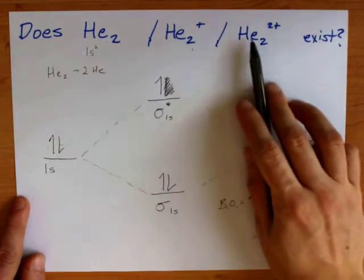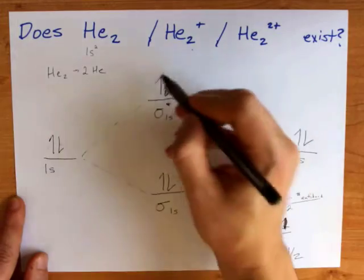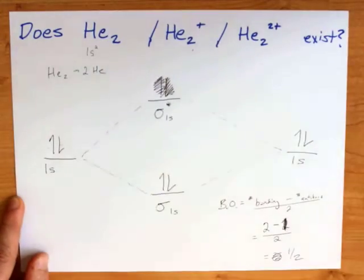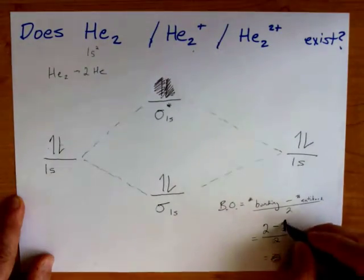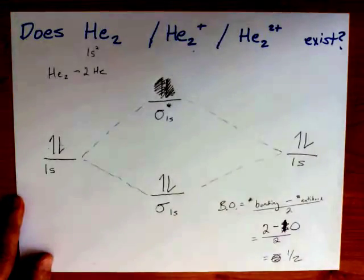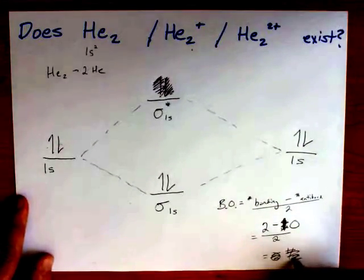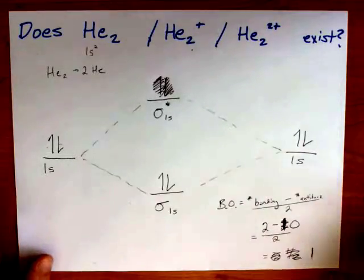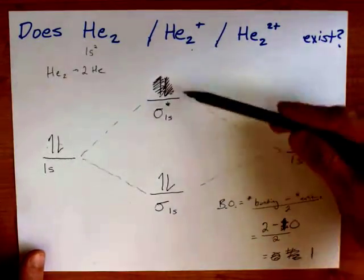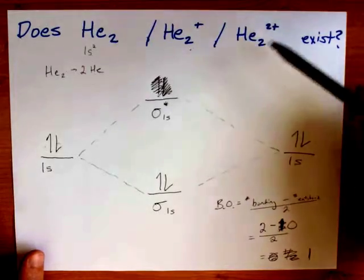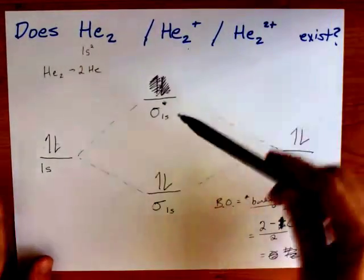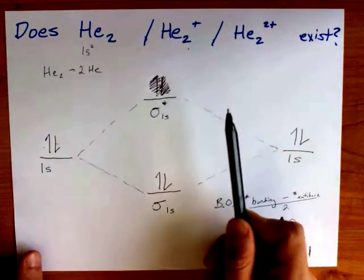By the time we get to He₂²⁺, we're also removing this electron. That brings us down to zero electrons in the anti-bonding orbitals. 2 minus 0 over 2 gives us a whole 1. And so in theory, according to molecular orbital theory, He₂²⁺ has a single covalent bond between them.